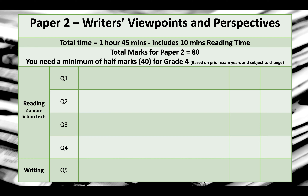The questions are set out in the same way as paper one — you've got five questions and the first four are reading. The difference here is that you've got two non-fiction texts to read, and this is the paper where you are likely to get a 19th century text. One of them will be late 19th century or early 20th century, so there'll be quite a big time difference between when the two texts were written, which you'll see reflected in the language used.